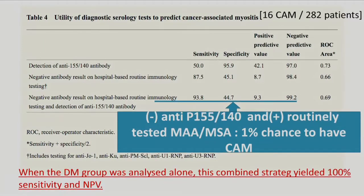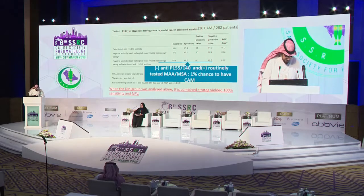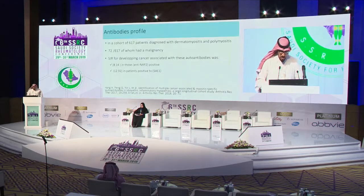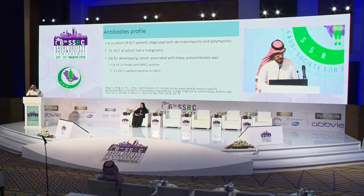In the opposite direction, if a patient has negative anti-TIF1-155/140 and positive myositis-specific antibody, that patient carries just a 1% chance of having cancer, and this risk reduces to zero in a case of dermatomyositis. Other antibodies associated with malignancy include anti-NXP2 and anti-SAE1.